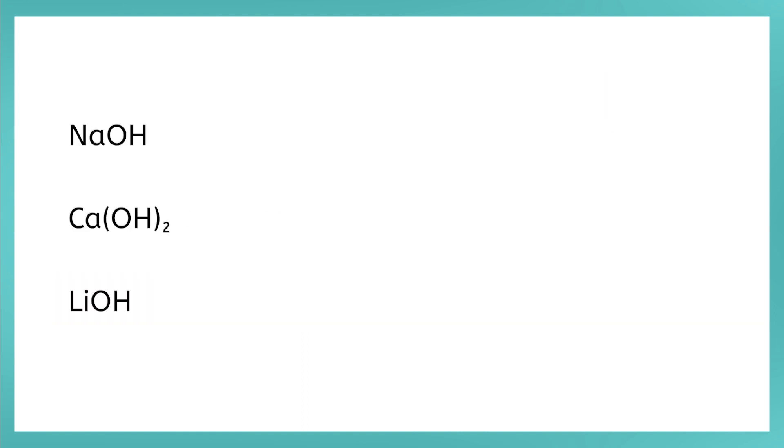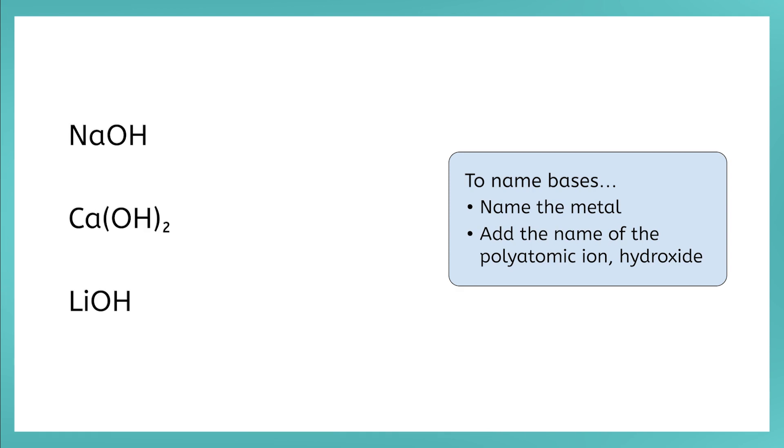What about bases? Look at the formulas for these bases. Do you notice a pattern? They all end in OH. This is another polyatomic ion, hydroxide. To name a base, you name the metal and then add the word hydroxide. For example, NaOH is sodium hydroxide. Ca(OH)2 is calcium hydroxide. What about LiOH? Lithium hydroxide.